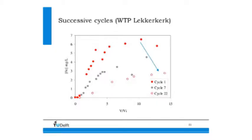One of the benefits of this technology is that it improves over time. Most filters clog and need backwashing, but this technology improves after every injection-abstraction cycle. This graph illustrates iron concentrations on the vertical axis, and V divided by VI — the volume you can abstract with low iron divided by the volume injected — as an efficiency ratio on the horizontal axis. In cycle one, iron breakthrough happens pretty fast, but after several cycles it gets better and better.